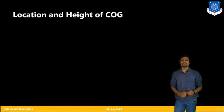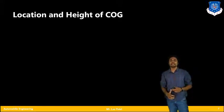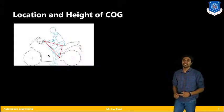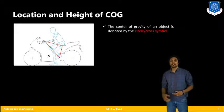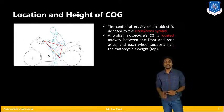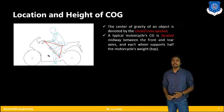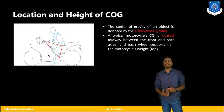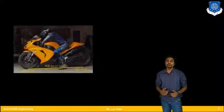Moving further, we will see about the location and height of center of gravity. As mentioned, there are several possibilities of changing center of gravity in different maneuvers like accelerating, turning, and sudden braking. According to the maneuvers, the center of gravity is going to change. In the diagram you can see it is symbolized by a cross or circle symbol. A typical motorcycle's center of gravity is located between the front and rear axle, slightly towards the front wheel since the engine is at the frontal portion. That is for static recognition.